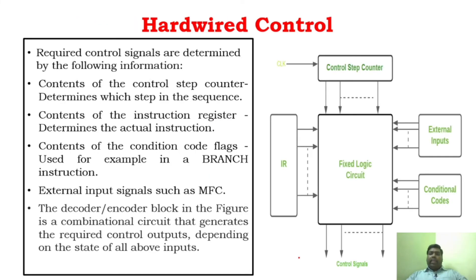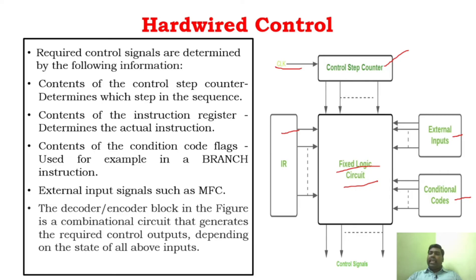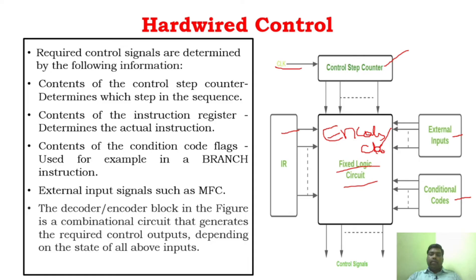If you take Hardwired Control, we will just see this basic circuit — the basic elements of the processor. This is the Hardwired Control diagram. You can see it has an instruction register and a control step counter. The input to the control step counter is a clock. It also has external inputs and conditional codes. There is something called a fixed logic circuit, and as I said it generates the control signal based upon the circuits. This fixed logic circuit will have both an encoder and a decoder.